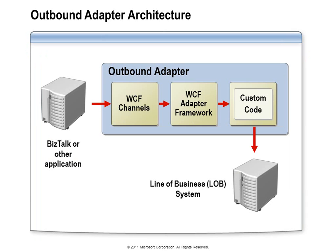Looking at the outbound architecture, we start with BizTalk or another application that creates the adapter, which is essentially a WCF channel. The WCF channel model wraps the adapter framework, and the adapter framework can call your custom code that knows how to interact with your line of business system or database. The client sees the WCF API, sends a message through it, the adapter framework hands it to your custom code, which pulls it apart, finds the relevant data, and invokes operations — calling stored procedures or inserting or retrieving data from your database.